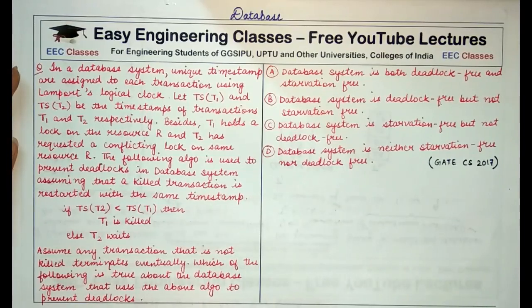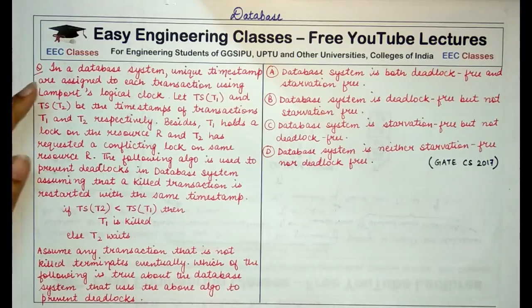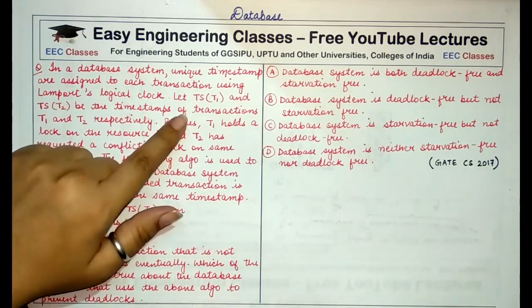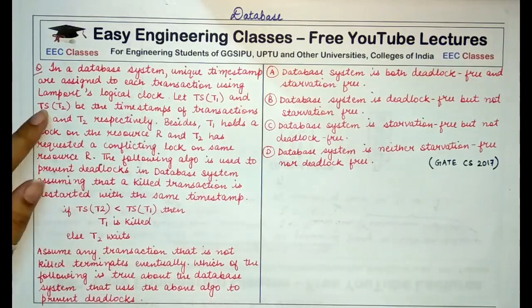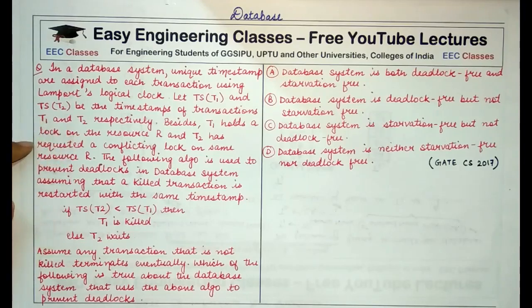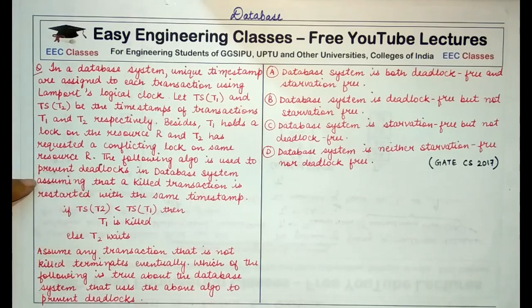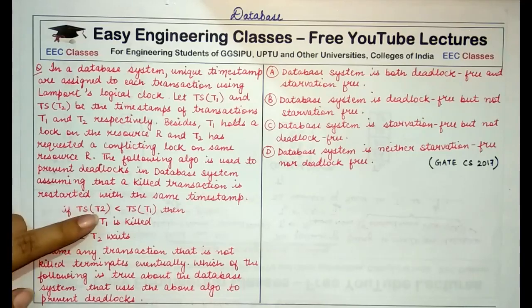The question says that in a database system, unique timestamps are assigned to each transaction using Lamport's logical clock. Let TS(T1) and TS(T2) be the timestamps of transactions T1 and T2 respectively. T1 holds a lock on resource R, and T2 requests a conflicting lock on the same resource R. The following algorithm is used to prevent deadlocks in the database system.